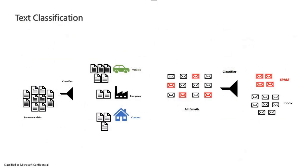These are the main AI Builder tools. For example, we can do text classification. What is text classification? Say you're an insurance company getting lots of insurance claims — maybe because of coronavirus. Based on labels such as vehicle insurance, company insurance, or content insurance, text classification is able to find which document is related to which group. It helps you classify your text.